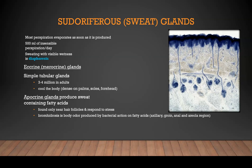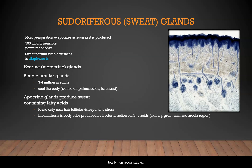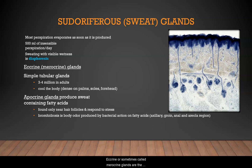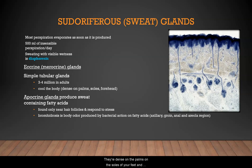Sudoriferous, or sweat, glands — you are perspiring all the time. You produce about 500 milliliters of insensible perspiration per day that evaporates as soon as it is produced. When you start to do tough, hard work and have visible wetness with sweating, that is called diaphoresis. Eccrine, or merocrine, glands are the simple tubular glands; there are three to four million in adults and they help cool the body. They are dense on the palms, soles of the feet, and forehead, but found all over the body.